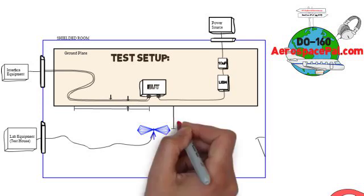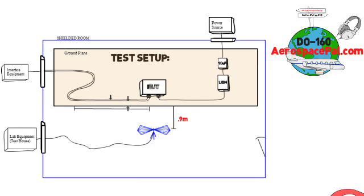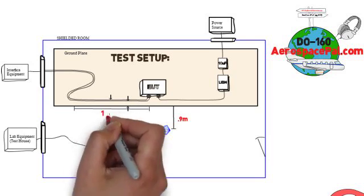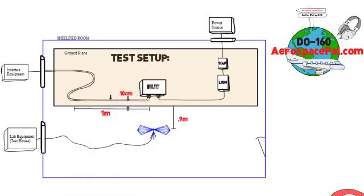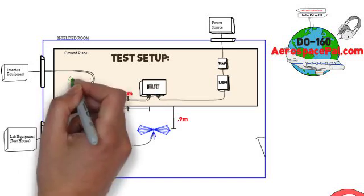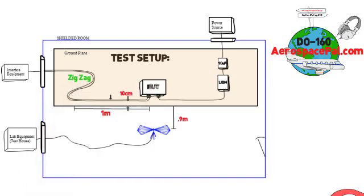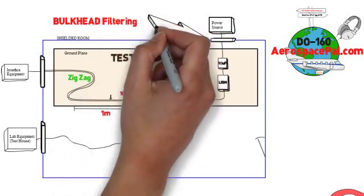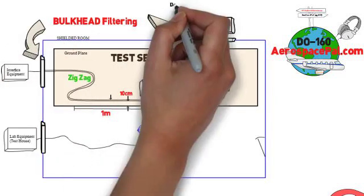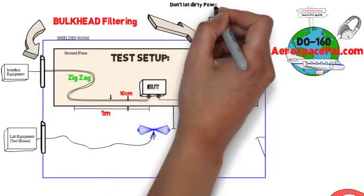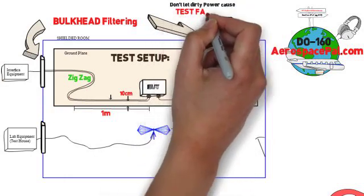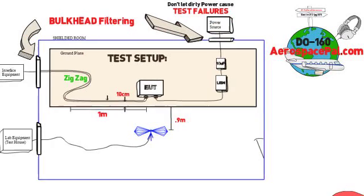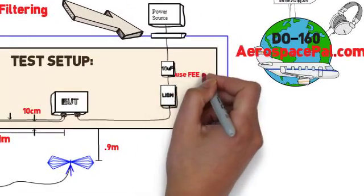Now a couple things to note, your antenna distance should be exactly 0.9 meters from the edge of the bench. And you should have at least 1 meter of your EUT bundle 10 centimeters from the edge of the bench. Additional cable beyond that can be zigzagged towards the back of the bench. Bulkhead filtering should adequately filter out the noise from power sources and simulated interfaces to prevent your interface emissions from causing a failure of the test.